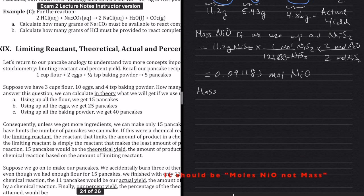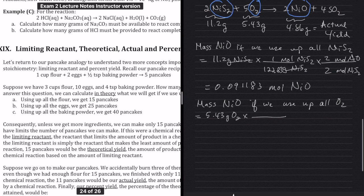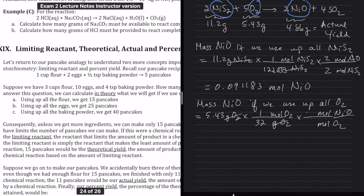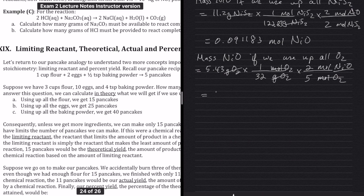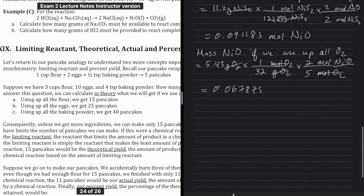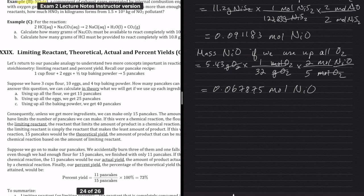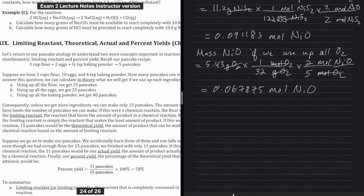Now the second calculation: moles of NiO if we use up all the oxygen. Starting with 5.43 grams of O₂, we convert to moles using the molar mass of 32 grams per mole. Then we apply the mole-to-mole ratio between NiO and O₂: NiO has a coefficient of 2 and O₂ has a coefficient of 5. Calculating this gives 0.067875 moles of NiO. Comparing the two results, oxygen gives us less product than NiS₂, so oxygen is our limiting reactant.